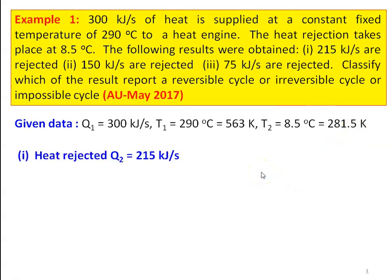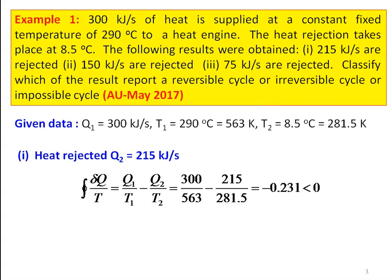We take the first case: heat rejected Q2 = 215 kJ/s. Based on the Clausius inequality, the cyclic integral of δQ/T = Q1/T1 − Q2/T2 = 300/563 − 215/281.5 = −0.231, which is less than 0. So the cycle is irreversible. For an irreversible cycle, the cyclic integral of δQ/T < 0.